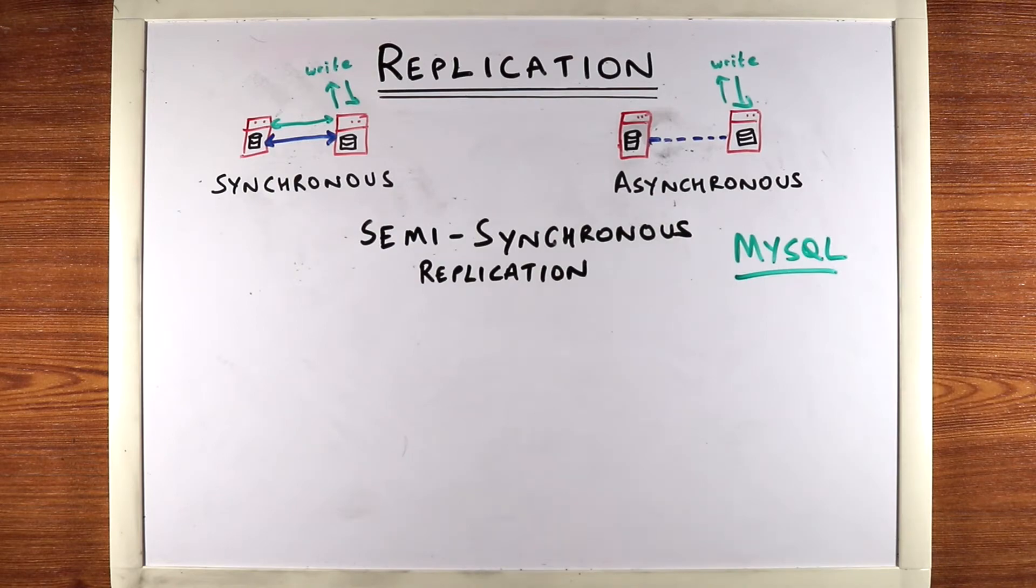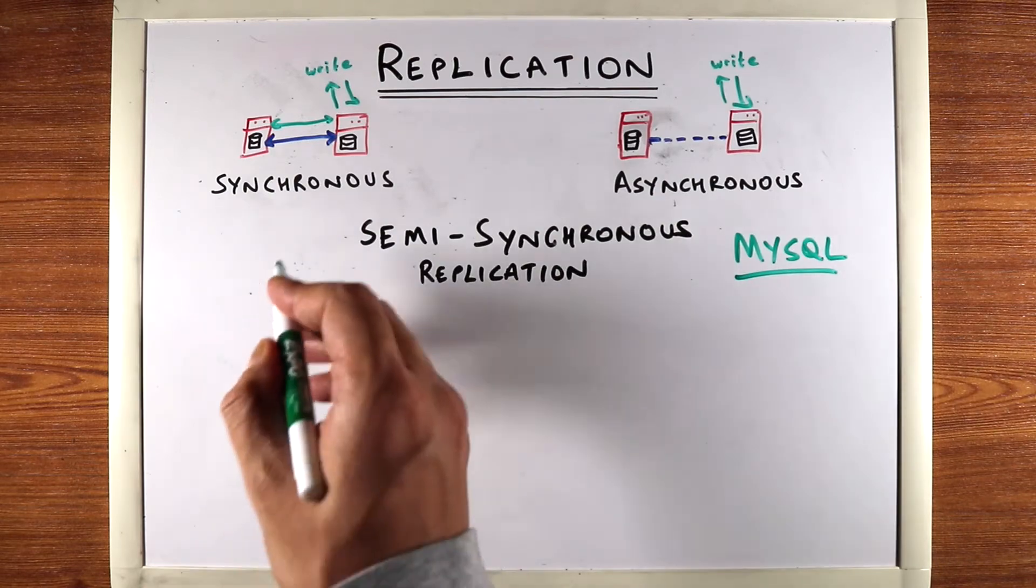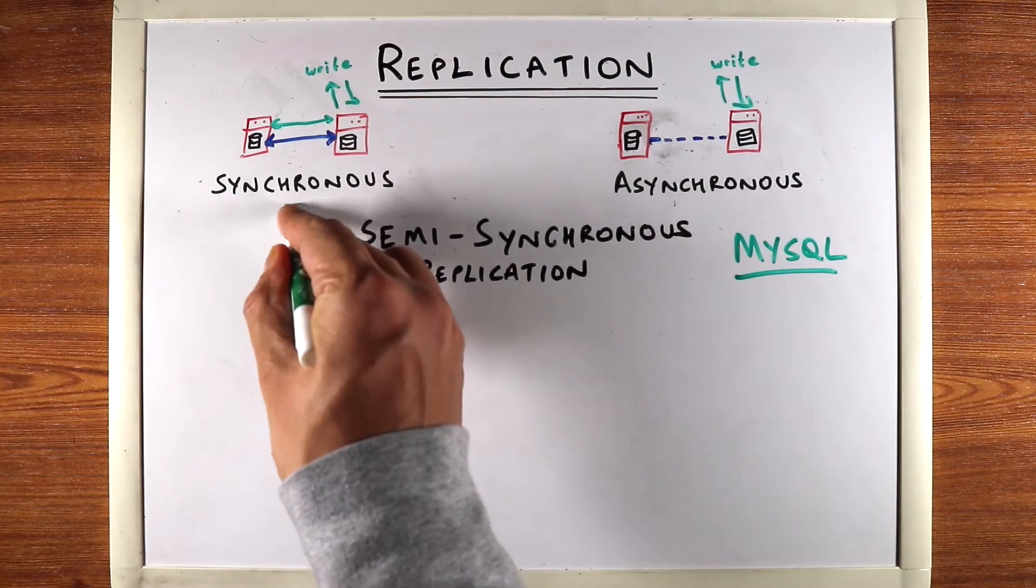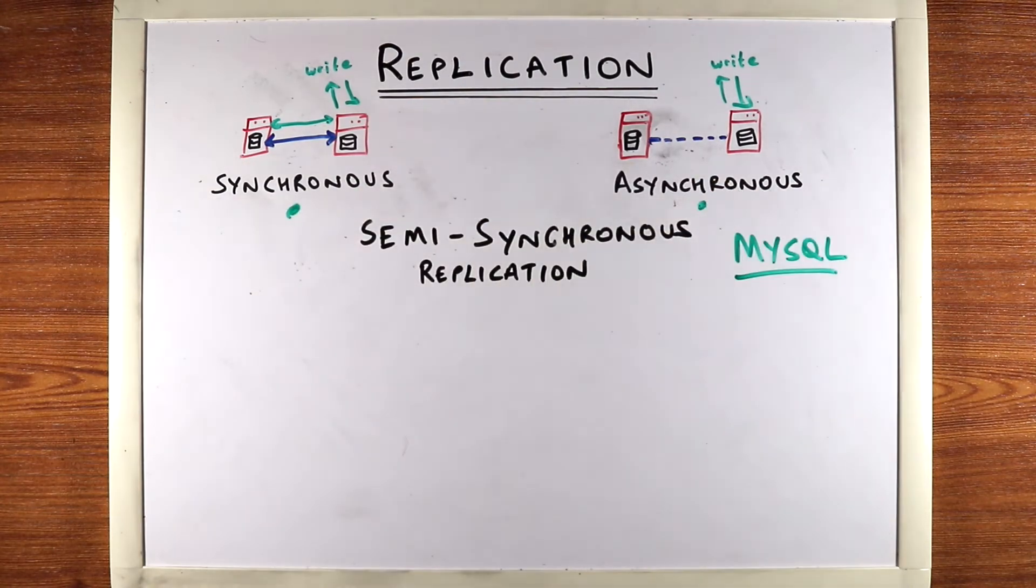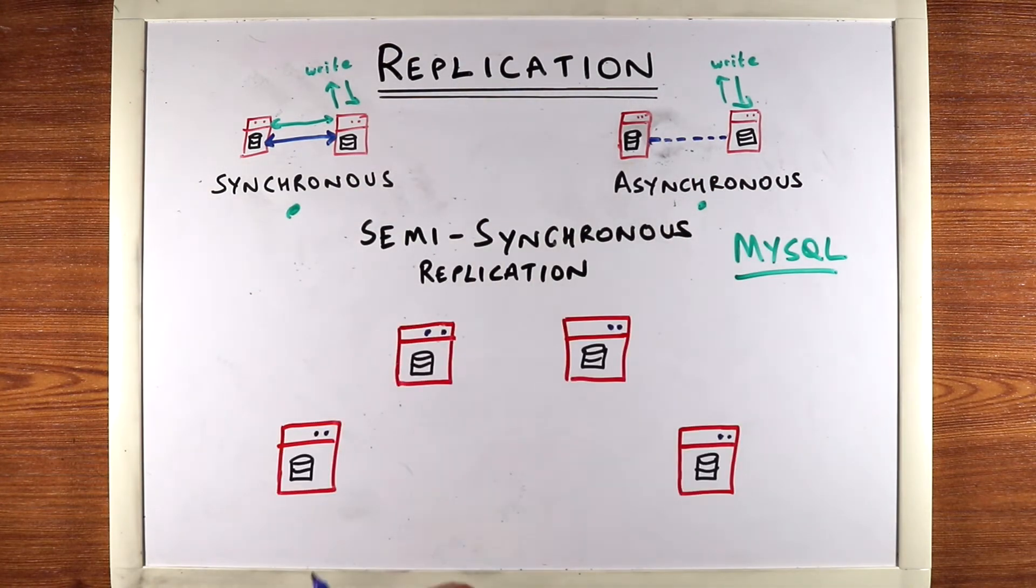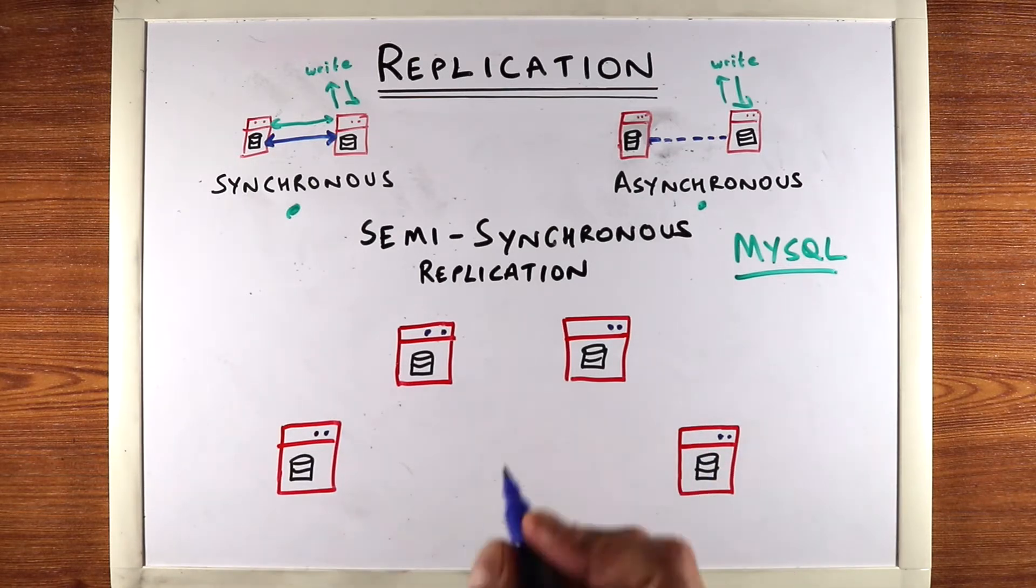The core idea is that you can create a hybrid between synchronous and asynchronous. Let's take an example. Say we have four machines, each hosting a database, and they're all copies of each other—all replicated. These two are synchronously replicated, and these two are asynchronously replicated.